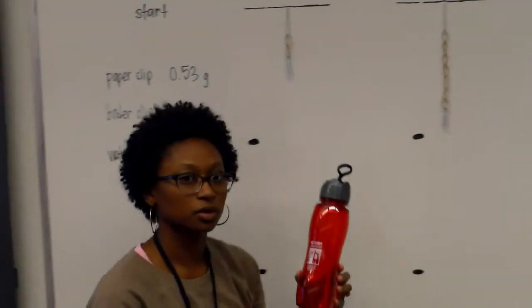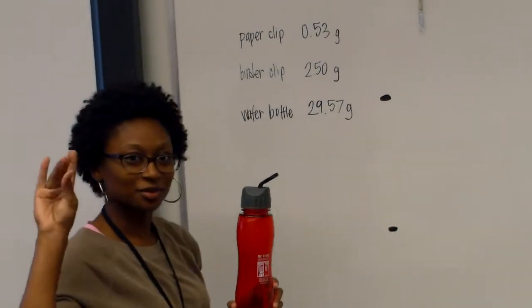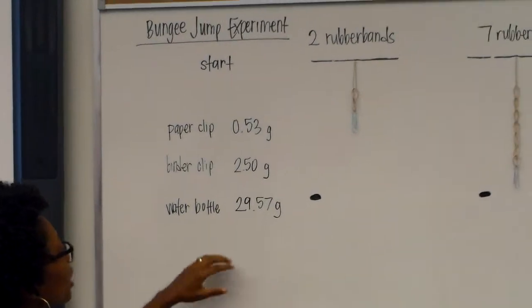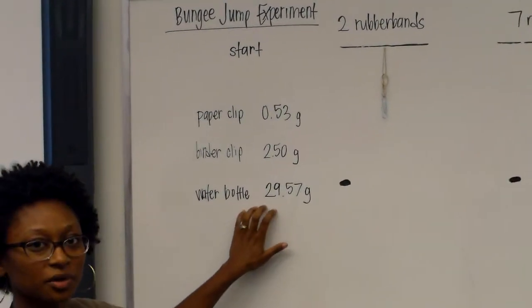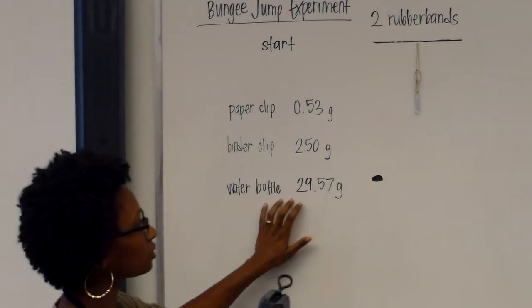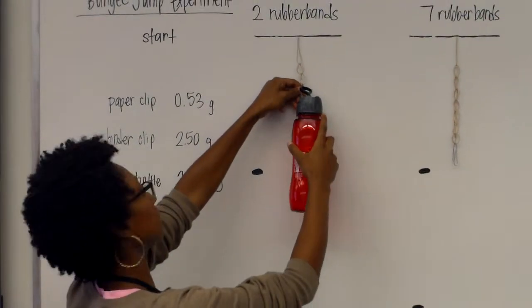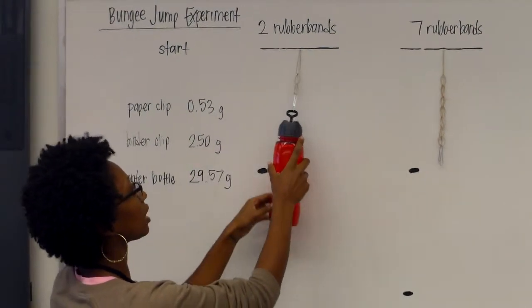Okay, the other thing is a water bottle. It's an NC State water bottle, go wolf pack. I'm also going to add the 29.5 gram water bottle to the paper clip, so that makes it about 30 grams. Starting from the top.